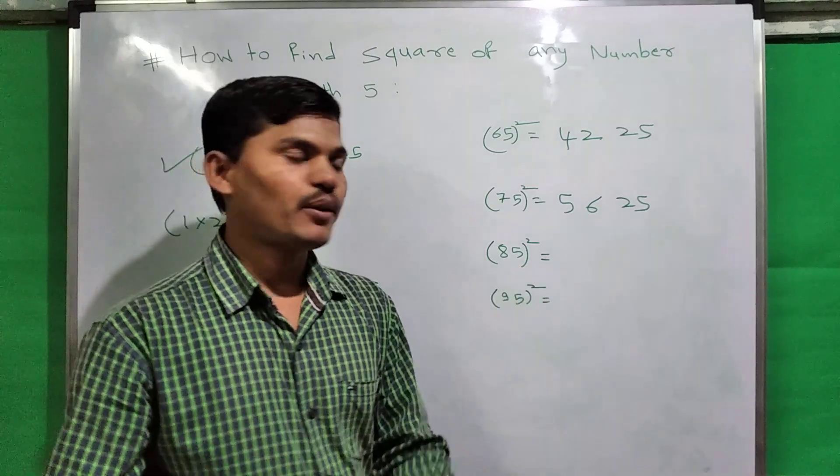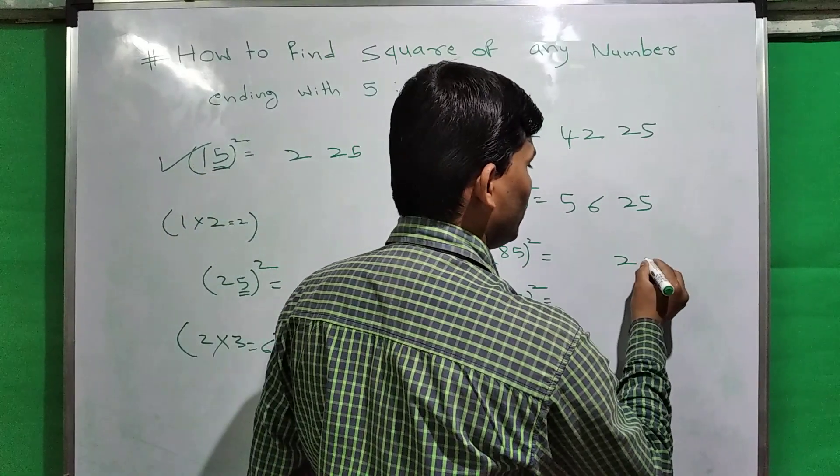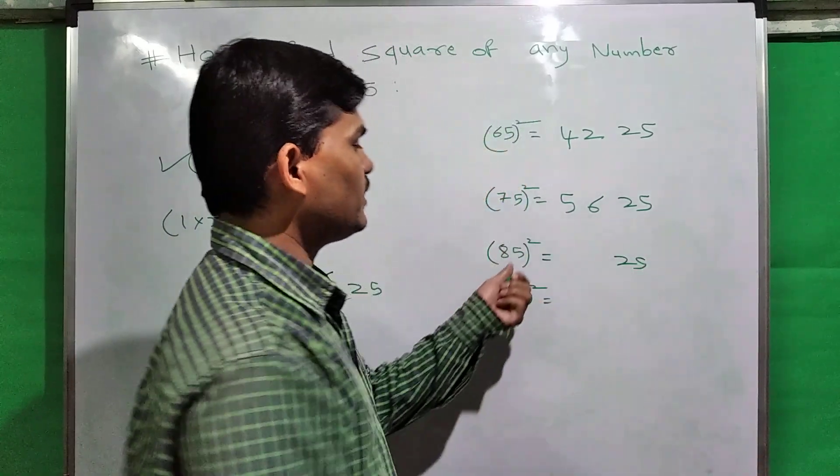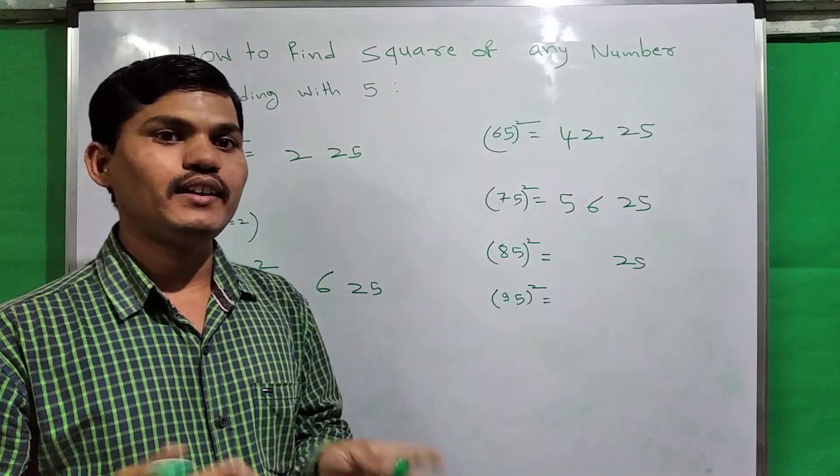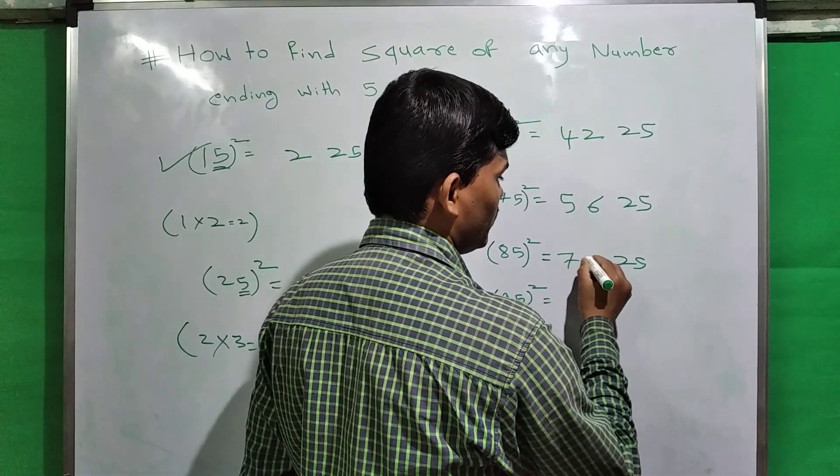Again here, 85. 5 square is 25, write down here. Now here, the tens digit is 8. The next number of 8 is 9. 8 times 9 is 72. So write down here: 7225.